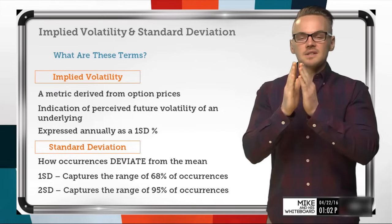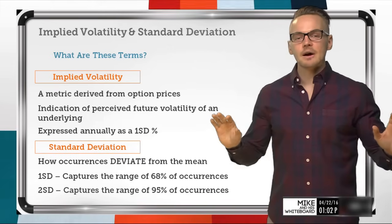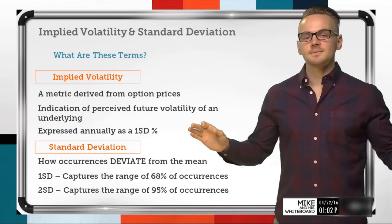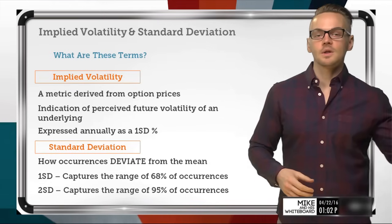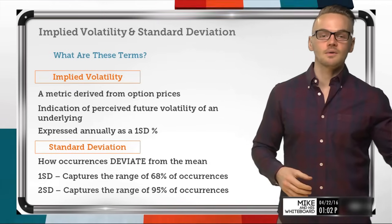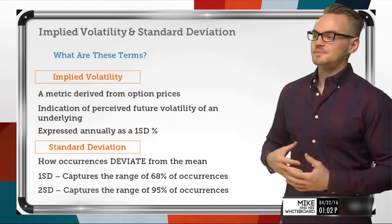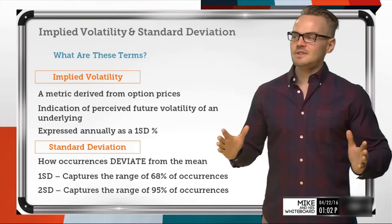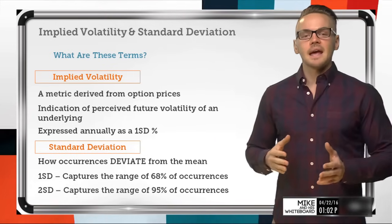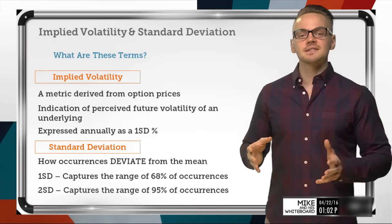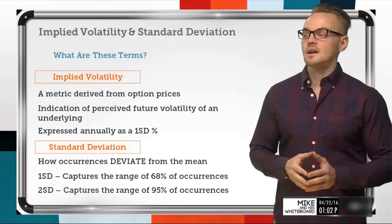We'll see a ton of occurrences there, but we're also going to see those outlier movements that go all the way to $100, or maybe all the way to zero where the stock would theoretically go bankrupt. So we're looking at the standard deviation of those occurrences and really just putting context around where those prices are.